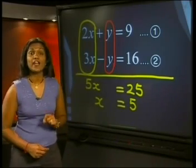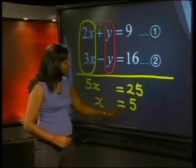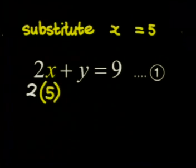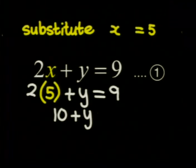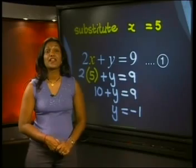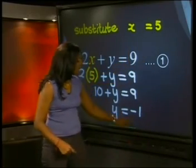Well, we need to find the value of the other unknown. We need to substitute this value, x equals 5, into one of the two equations. I will use equation 1. So, we get 2 multiplied by 5 plus y is equal to 9. We get 10 plus y is equal to 9. And simplifying this, y is equal to 9 minus 10, which is minus 1. That's it. We have the solution. It is the ordered pair (5, -1).